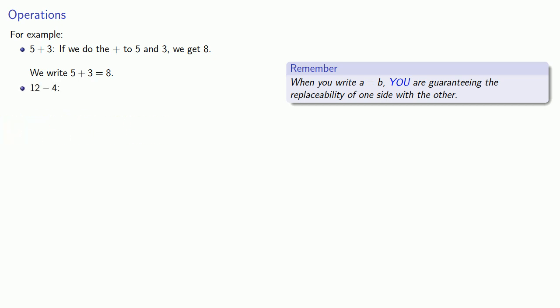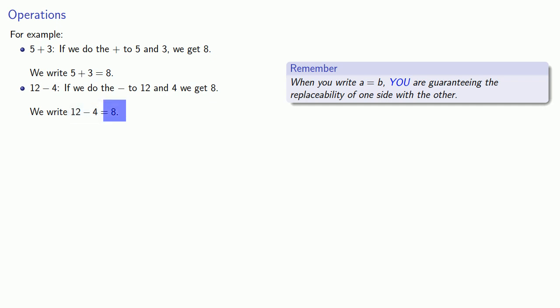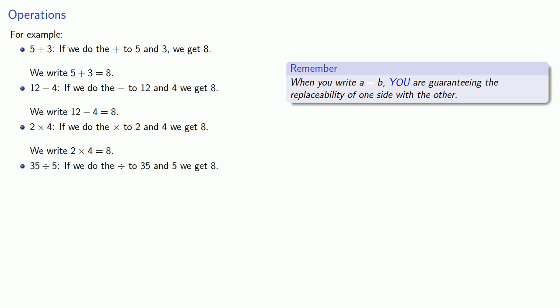12 minus 4: if we do the minus thing to 12 and 4, we get 8, and we write 12 minus 4 equals 8, because we are willing to guarantee that wherever you see 12 minus 4, you can replace it with 8. Similarly, 2 times 4 equals 8. And 35 divided by 5: if we do the divide by thing to 35 and 5, we get 8, and so we write 35 divided by 5 equals 8.